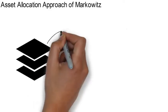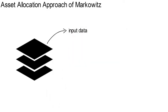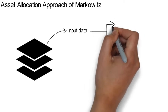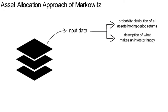Markowitz identifies three necessary layers for conducting an optimal asset selection process. First, the input data. The input data characterizes two things: on the one hand, the probability distribution of all assets' holding period returns, and on the other hand, an exact description of what makes an investor happy.